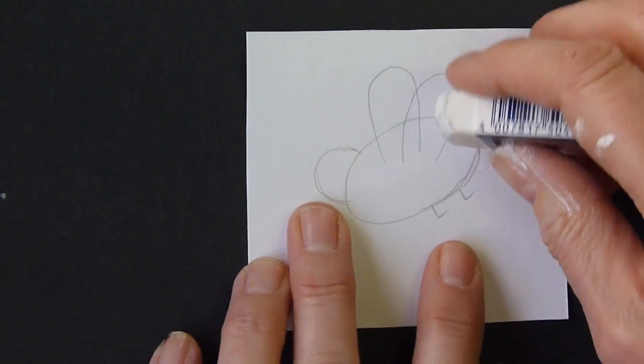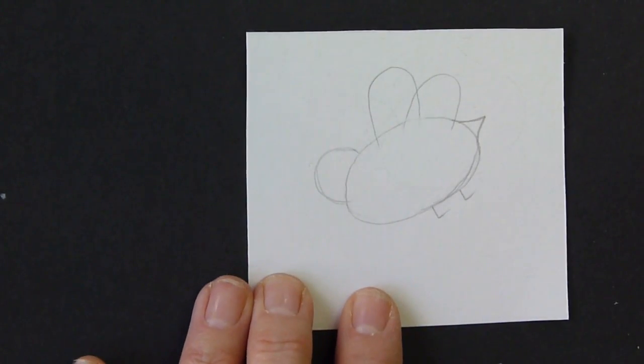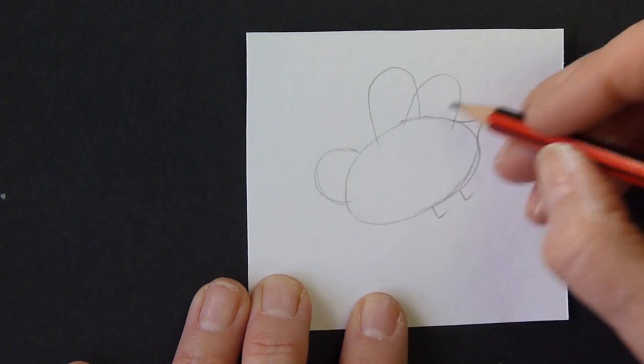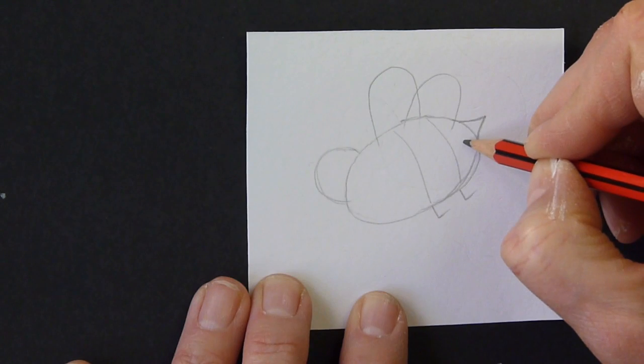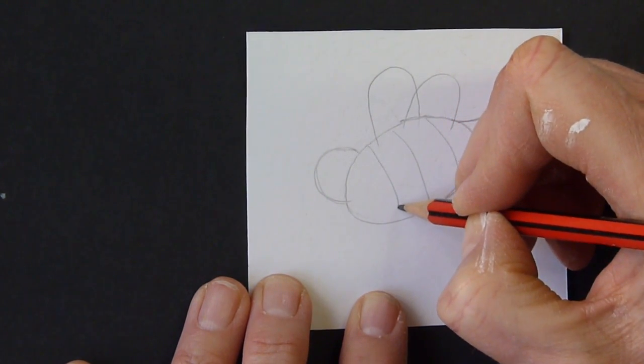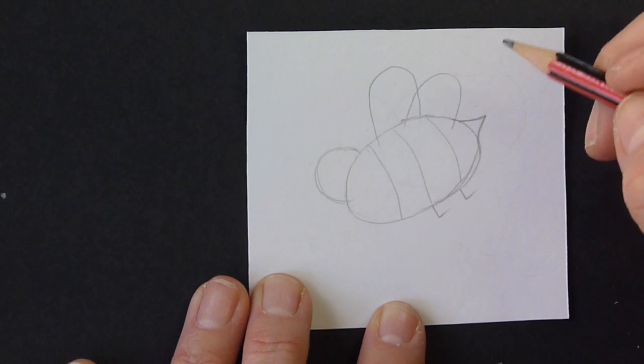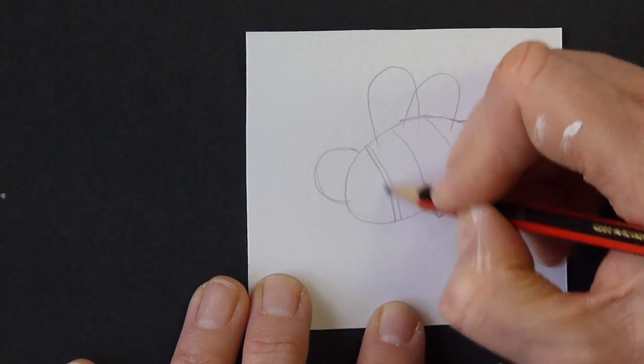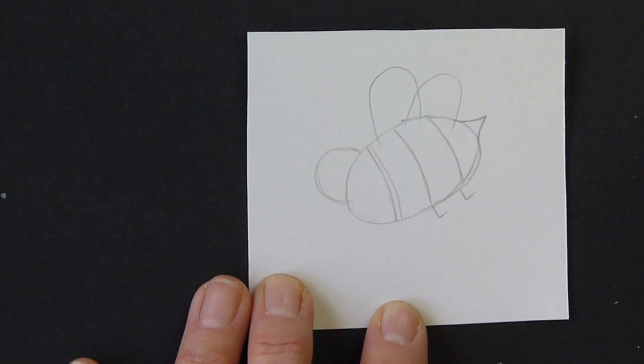And to start with as well, we don't need these middle bits of the wings where they go into the body because we're going to be concentrating on the stripes. So you're going to add your stripes. Something like that. You can have as many or as few as you want. So one there, one there. Something like that.